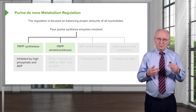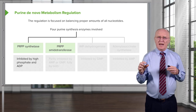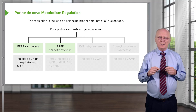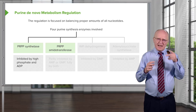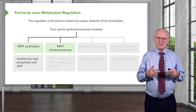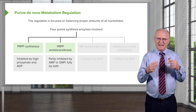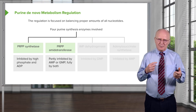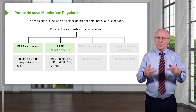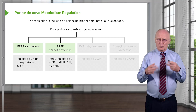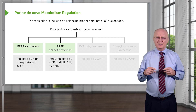The second enzyme important from a regulatory perspective is the one that catalyzes the very second reaction: PRPP amidotransferase. The regulation here is really interesting. This enzyme is partly inhibited by AMP or GMP, but it's fully inhibited by both when both are present. So either one will slow it down, but both are necessary to completely turn it off.